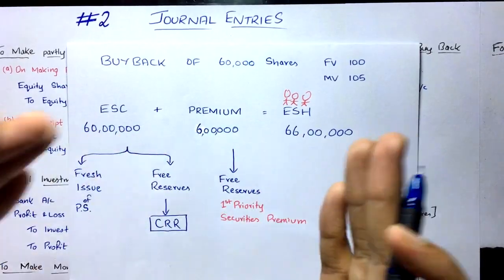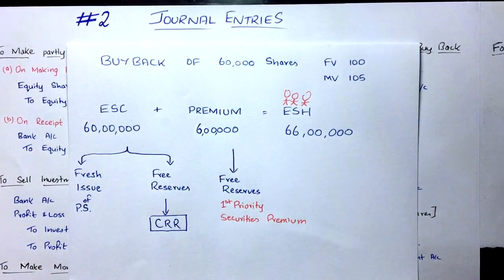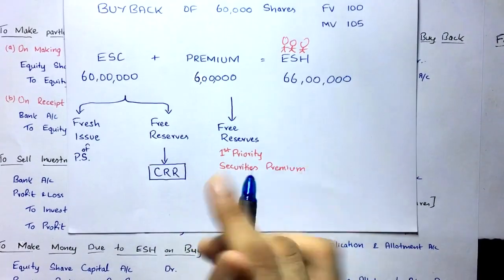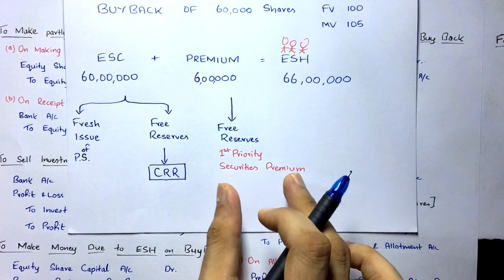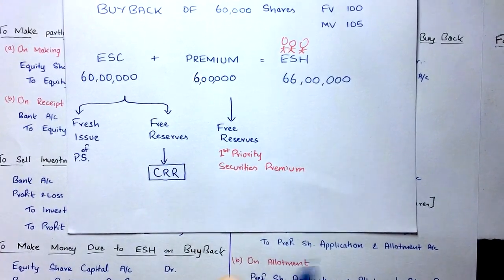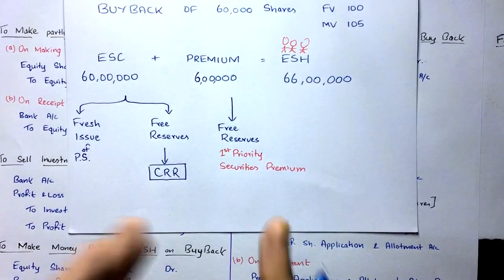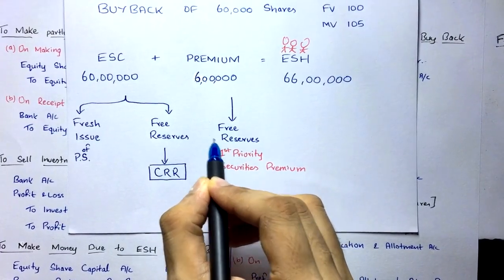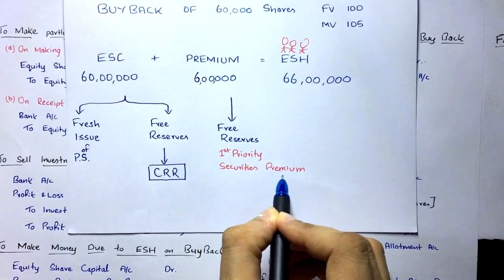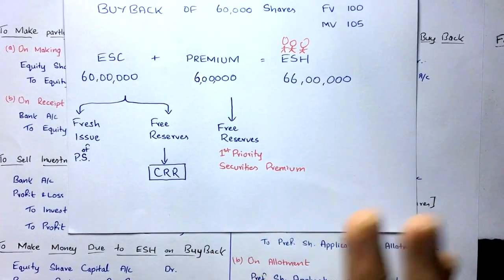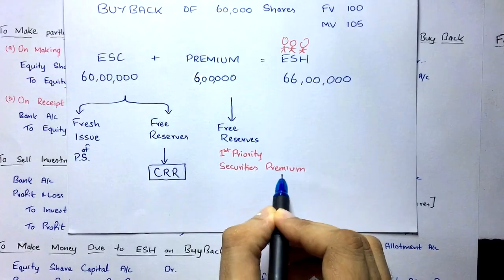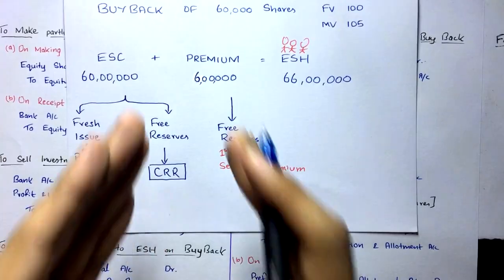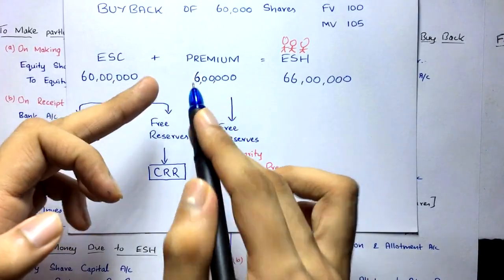To write off that loss, the company can use free reserves, as permitted under Section 68. The first priority to write off that loss is securities premium. Securities premium is not technically a free reserve, but under Section 68 it is treated as one. After securities premium, you can also use P&L, general reserve, and other revenue reserves.